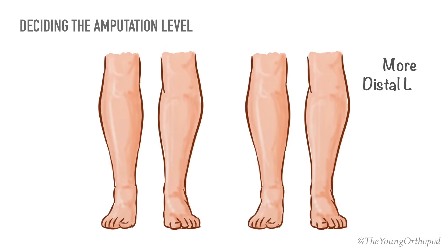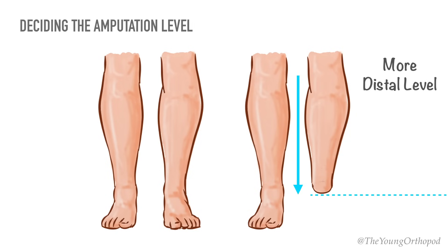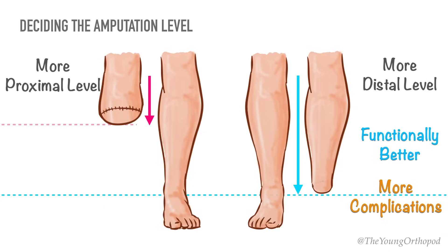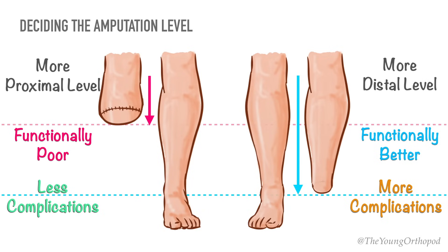A more distal level of amputation leads to better function but more complications, while a more proximal level is associated with a decreased complication rate but is functionally poor. The surgeon must consider the needs of the patient and comorbid conditions when deciding an appropriate level. If ambulation is the chief concern, the most distal level possible is chosen.